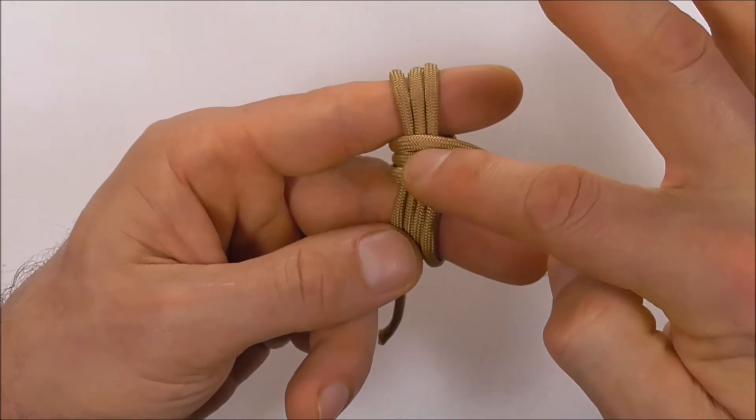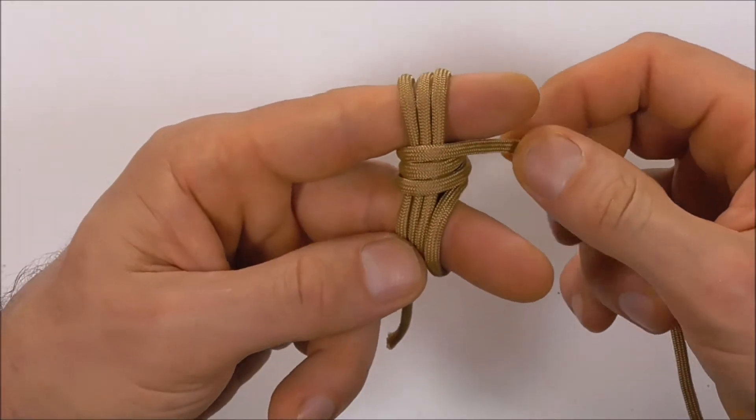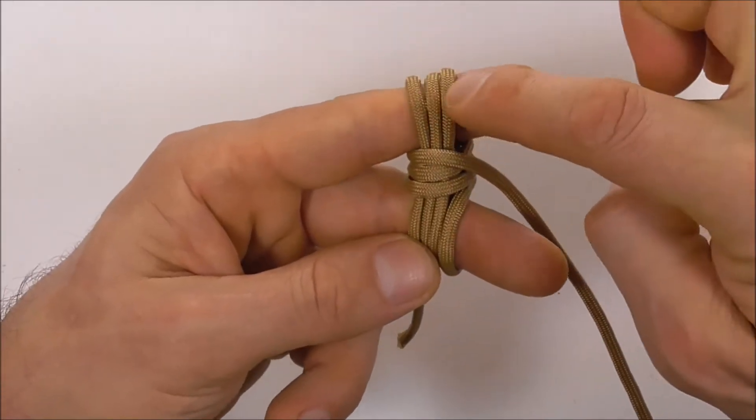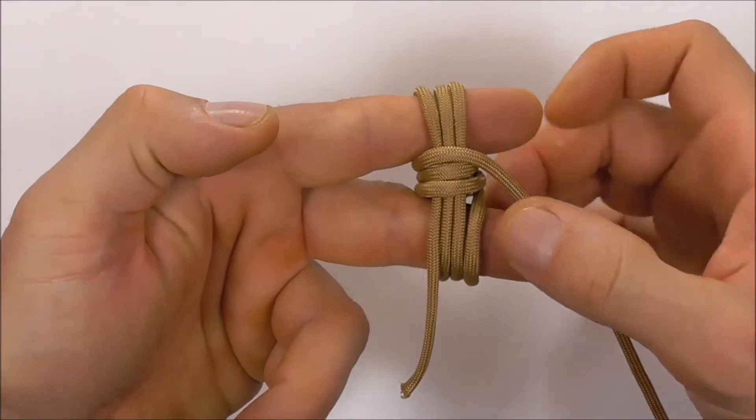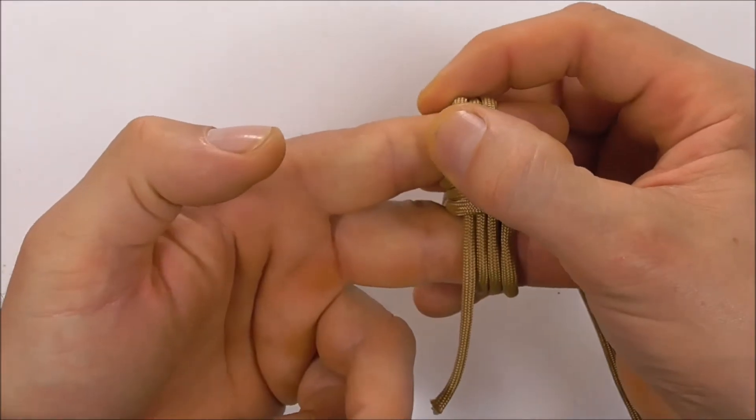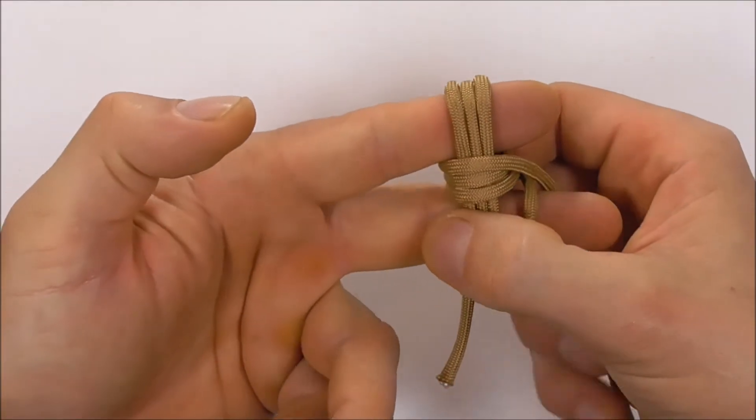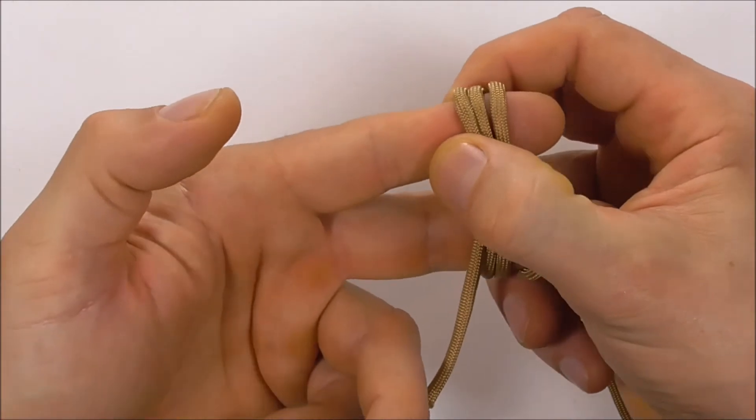So that's the second wrap, and this one's the third. As you're doing this, just make sure that your strands are nice and parallel and that they're not crossing anywhere. Once we get to this stage, we can take this thing off of our fingers, so just gently take it off.